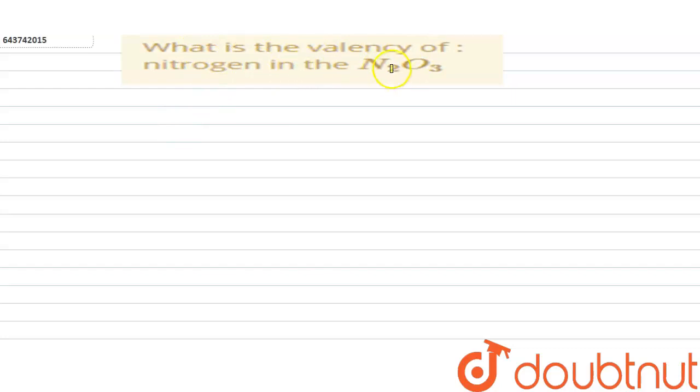Hi students, our question is: What is the valency of nitrogen in N2O3? Okay, so let's find the answer for this. So here, the sum of the oxidation number of compounds will always be zero.